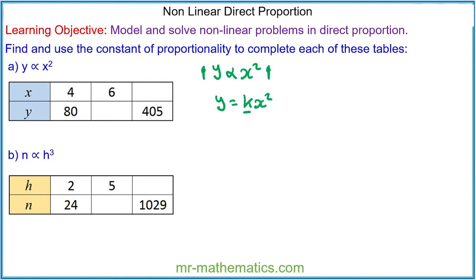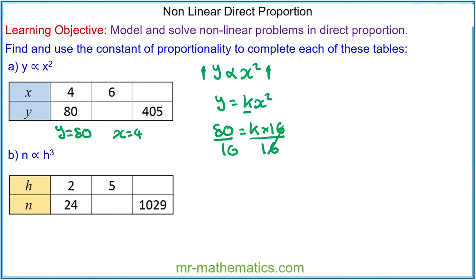To find k, we're going to substitute in when y is 80 and x is equal to 4. So 80 is equal to k times x squared, which is 16. We can divide both sides by 16, so the value of k will equal 5. So our model for this variation is y is equal to 5x squared.